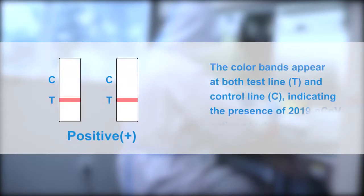Positive result: The color bands appear at both test line T and control line C, indicating the presence of 2019 novel coronavirus antigen in the specimen.